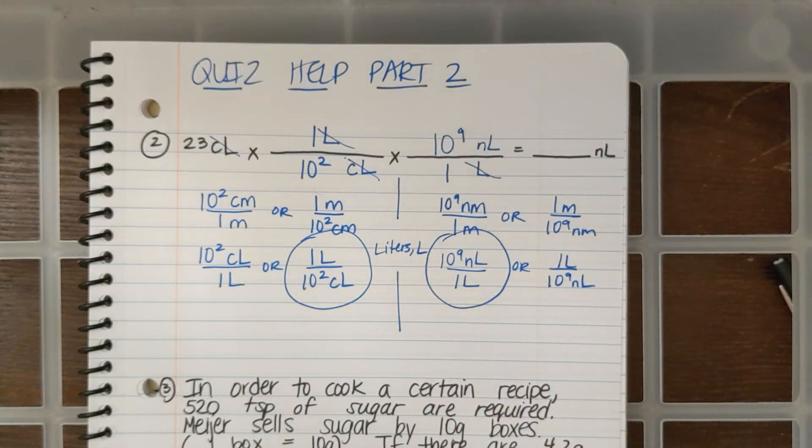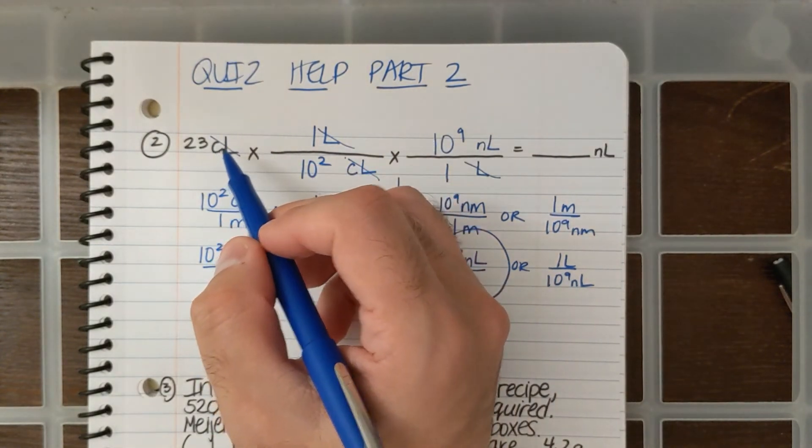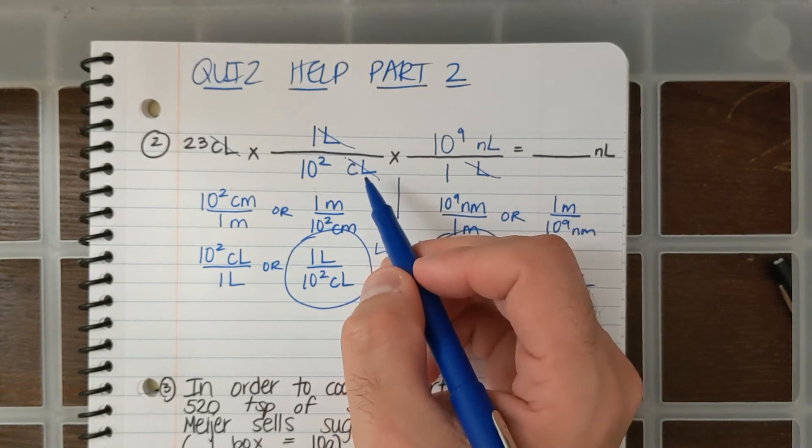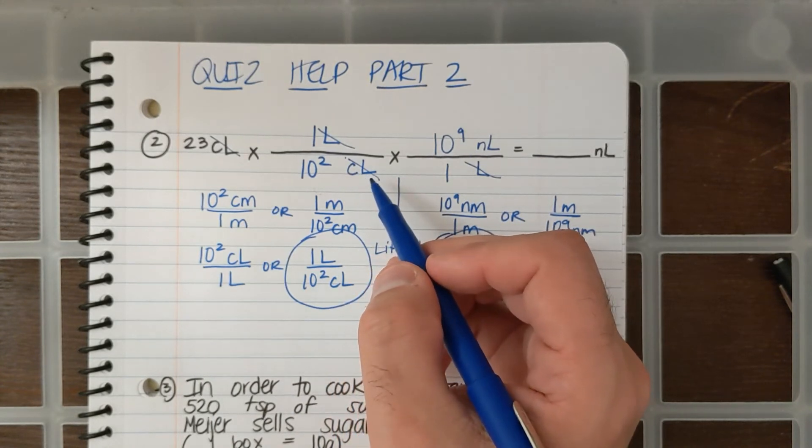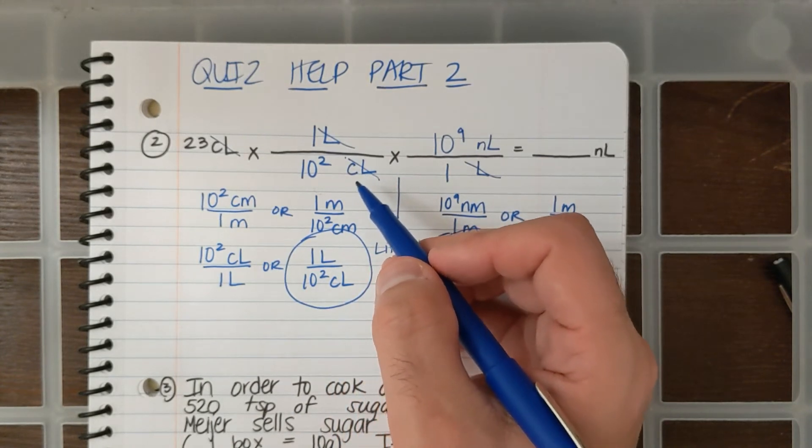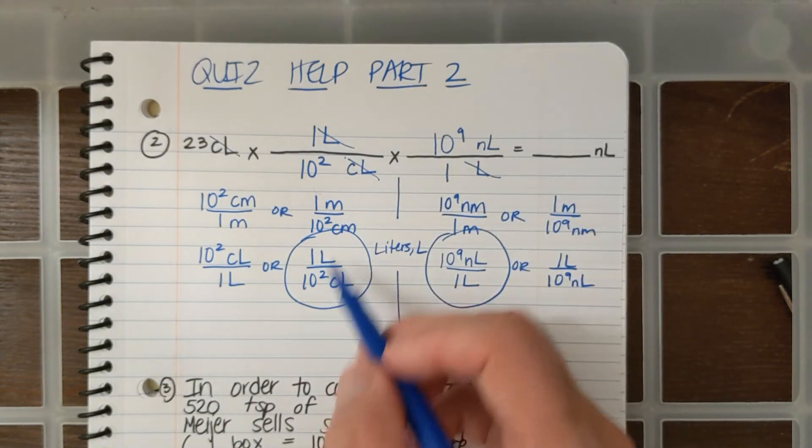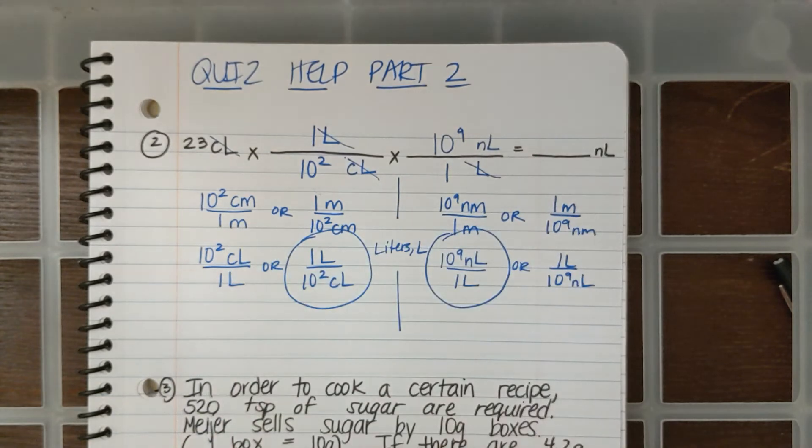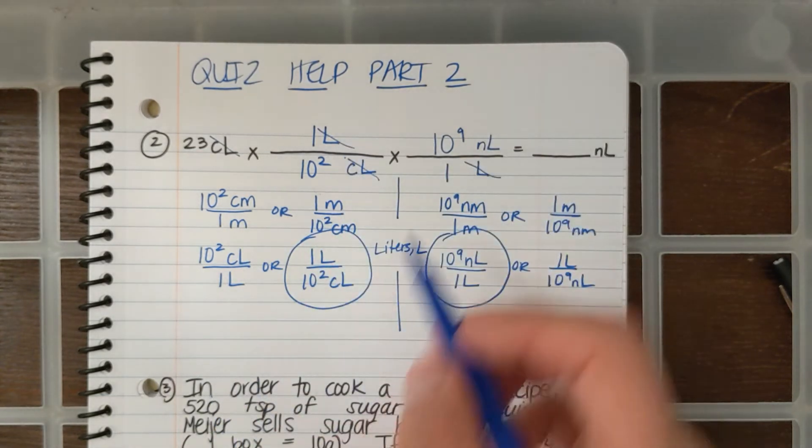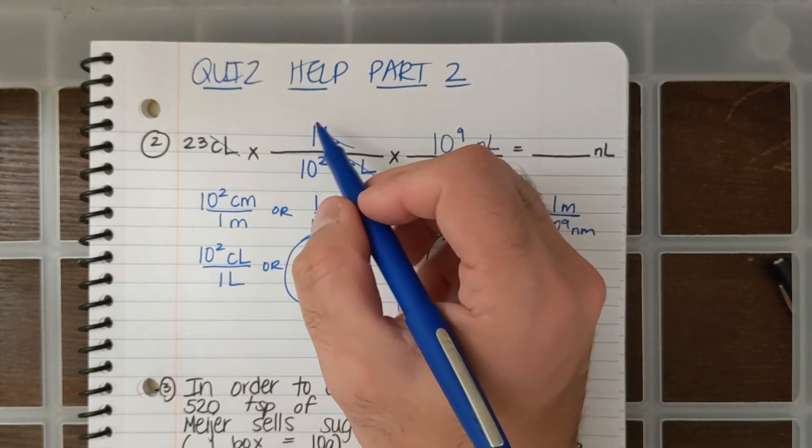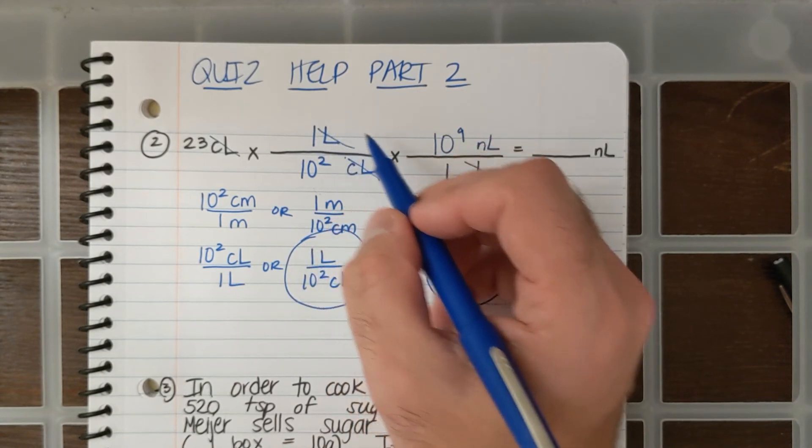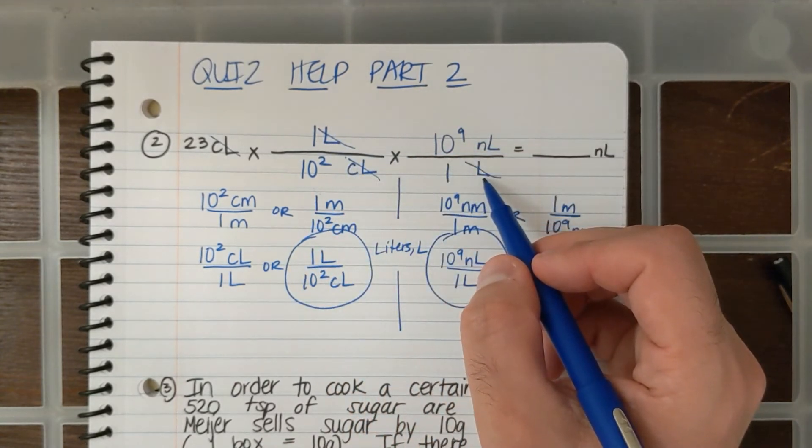So again, just to clarify the setup, I started with centiliters. That means I've got to put centiliters on the bottom. The only conversion factors that I have, and you'll be given conversion factors that has centiliters on the bottom, is this one. That's 10 to the second centiliters underneath 1 L. Then, if I have centiliters canceled out, and I have 1 L on top here, that means liters is going to be on the bottom here.